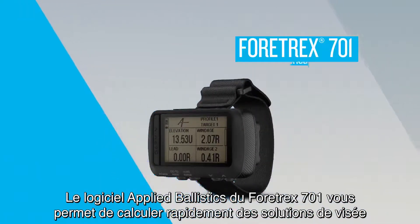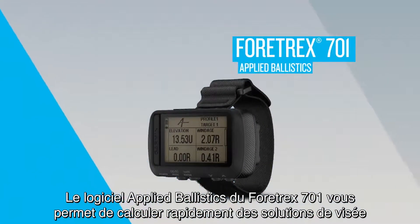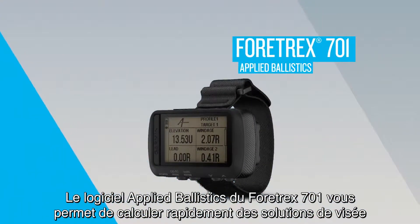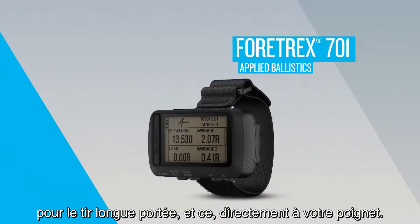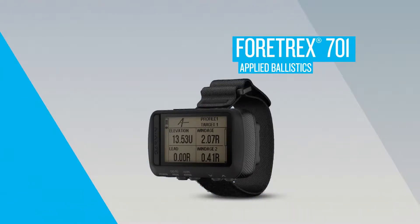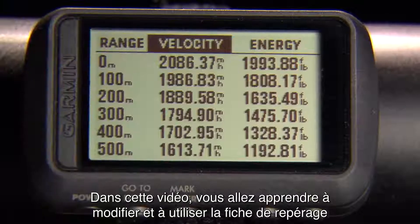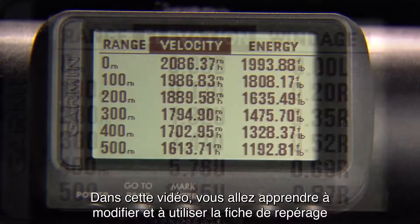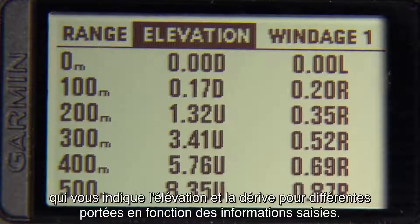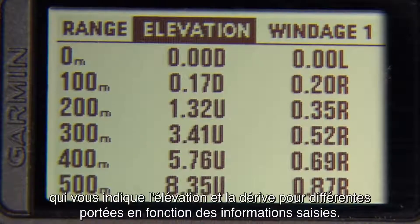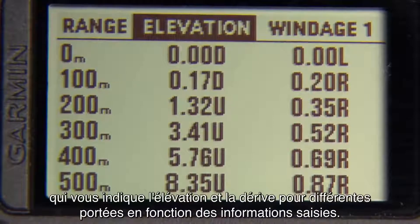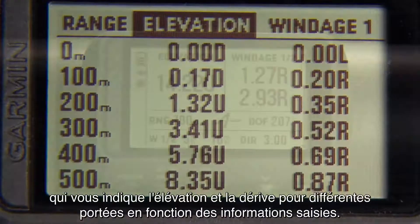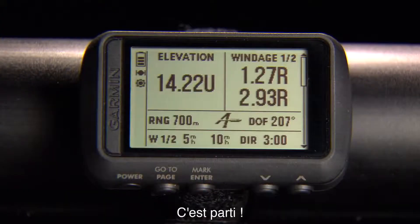The Fortrex 701 Applied Ballistics software allows you to quickly calculate aiming solutions for long-range shots right on your wrist. In this video, you'll learn how to edit and use the range card, which shows you elevation and windage for different ranges based on the information you've entered. Let's get started.